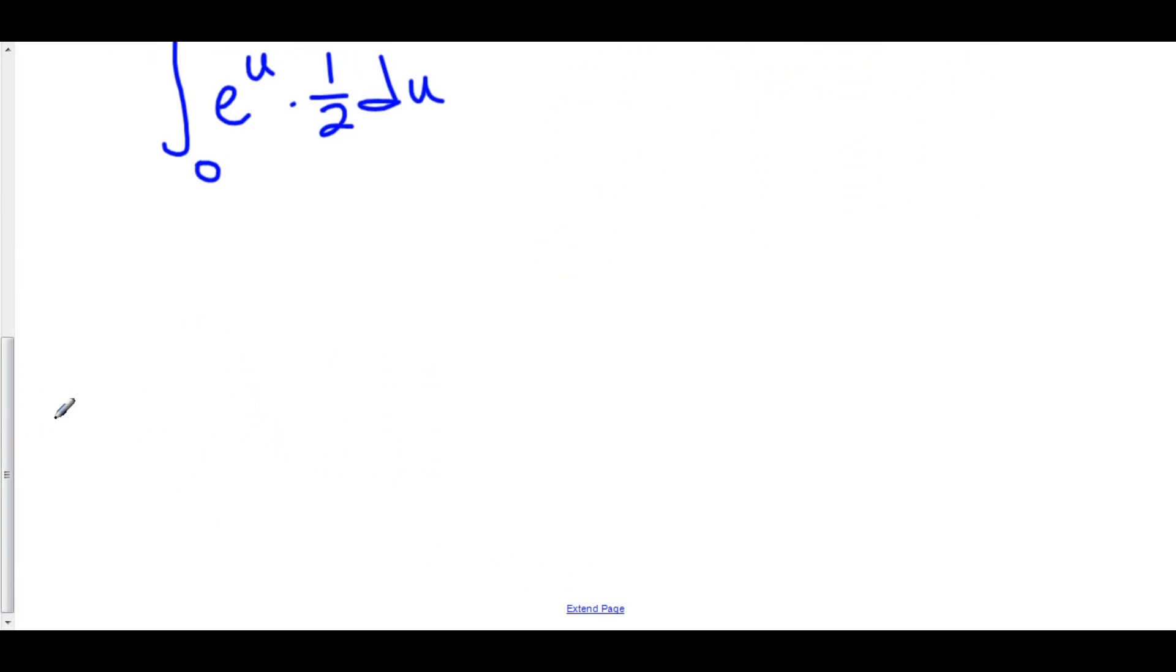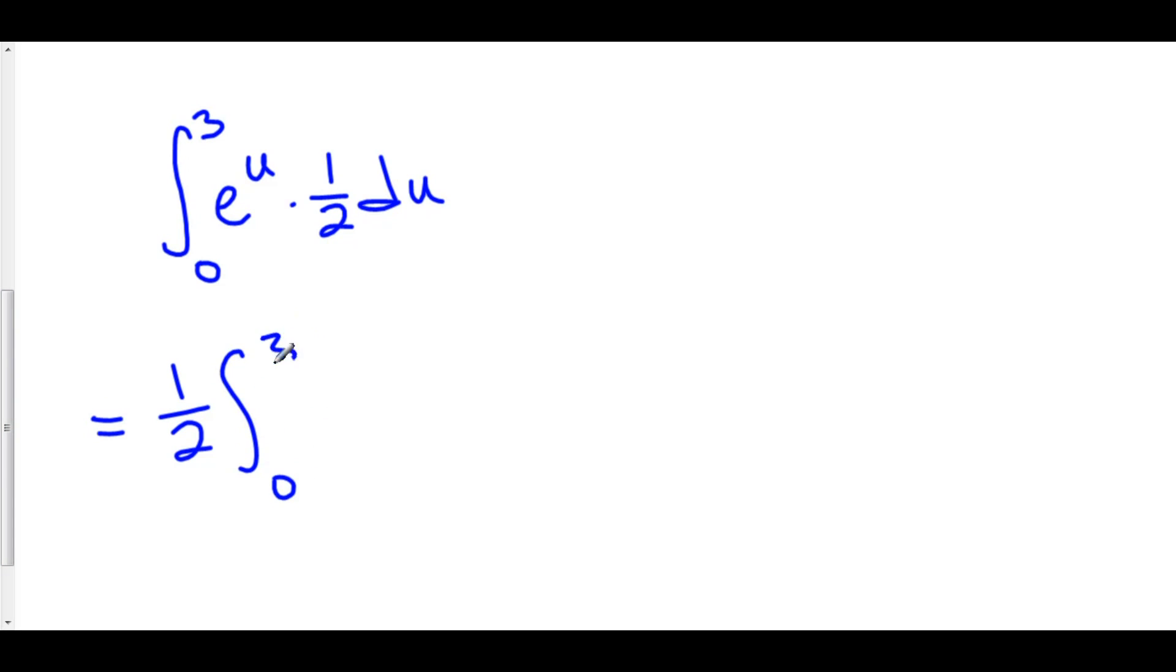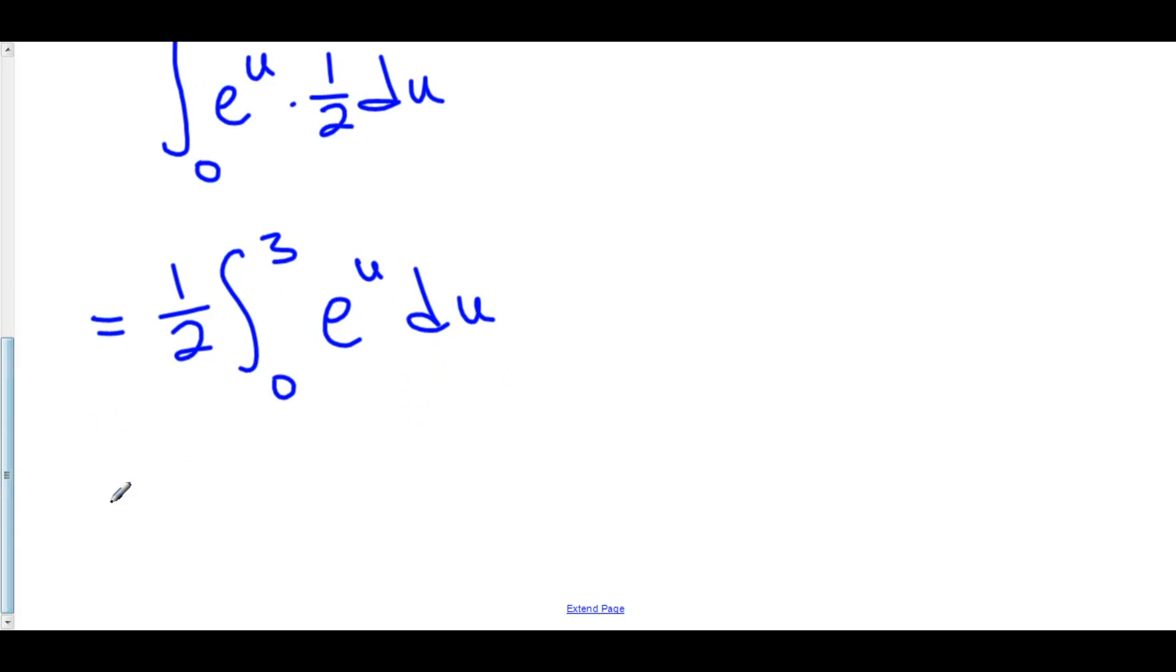We can use constant rule to pull out the 1 half, so we have 1 half times the integral from 0 to 3 of e to the u du. The anti-derivative of e to the u is e to the u, so this is 1 half times quantity e to the u from 0 to 3.